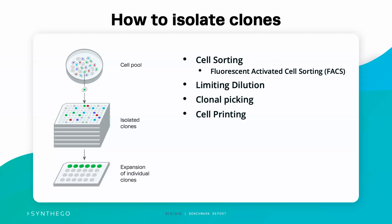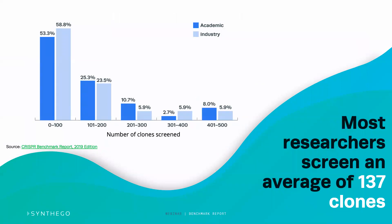So how many clones do we actually have to screen? From the benchmark report, the majority of people screen about 137 clones — right in the middle between 100 and 200 — and this was consistent across both academia and industry. Startlingly, some people are screening over 500 clones. This is a huge amount, because you need one set that you're growing up, then you split those and keep track of two sets so you can genotype one set and work out which clones you actually want.